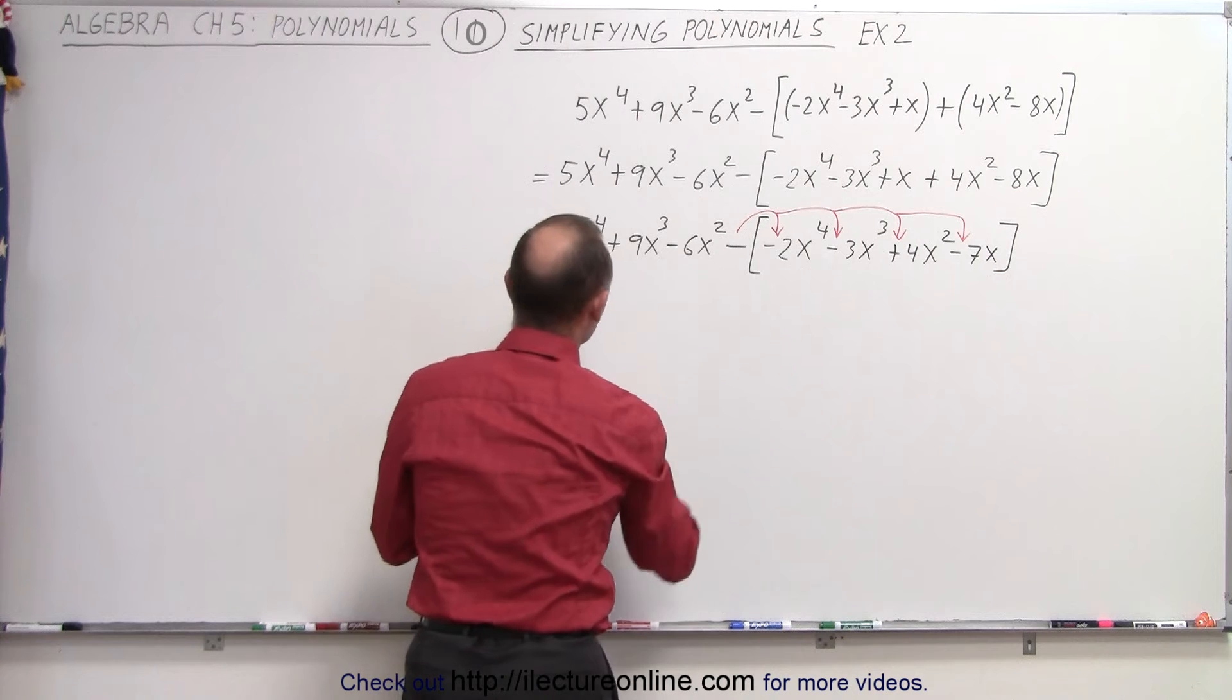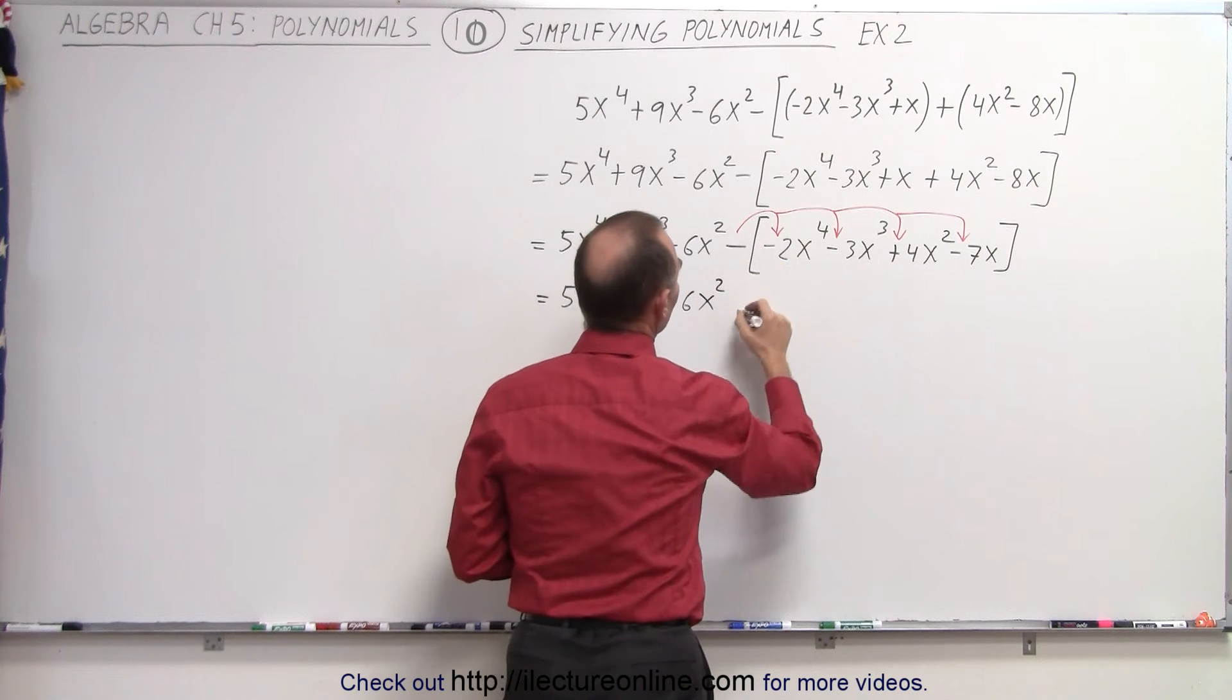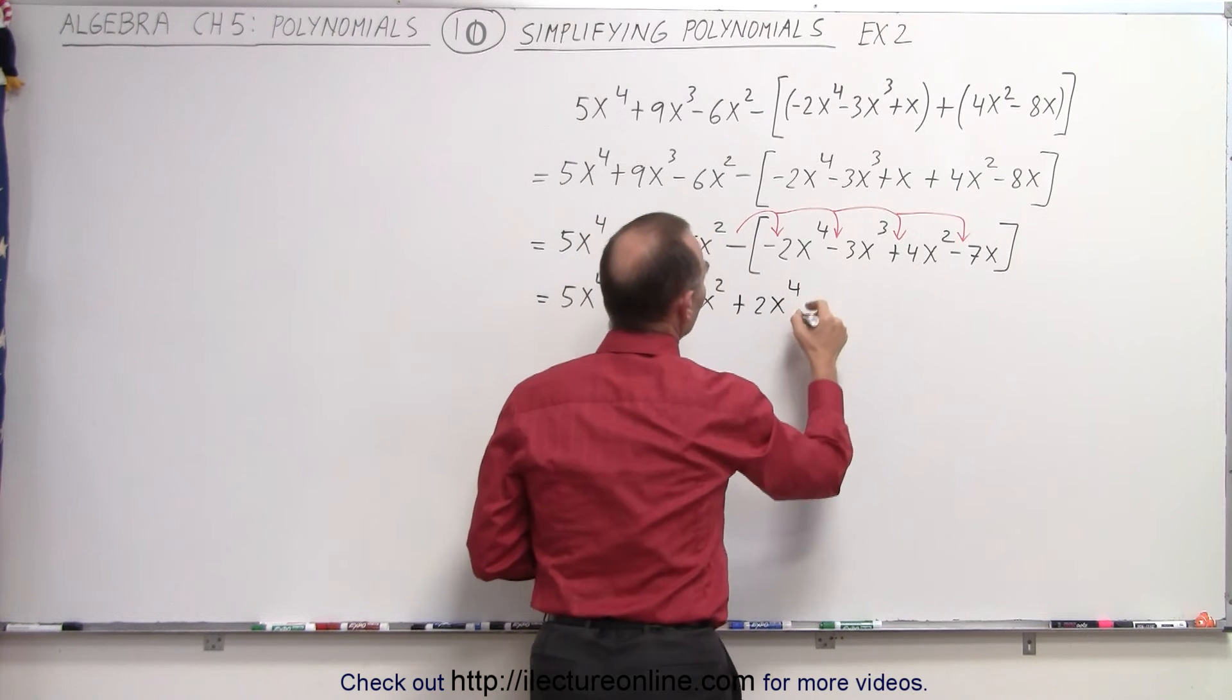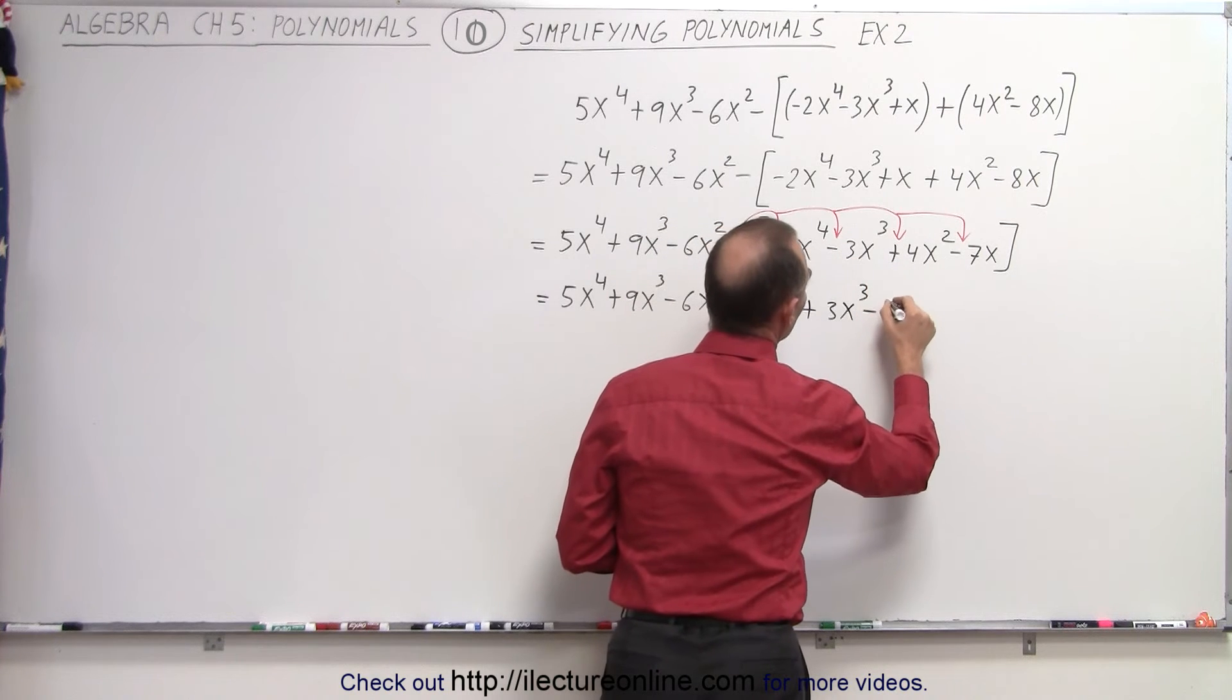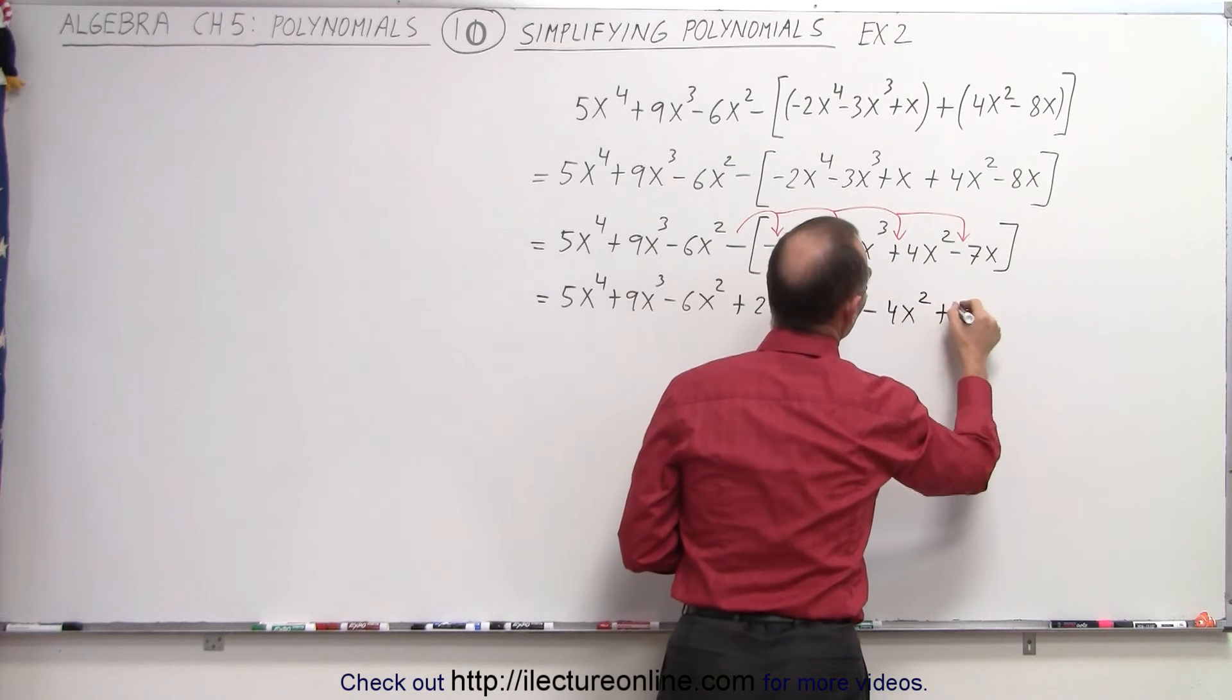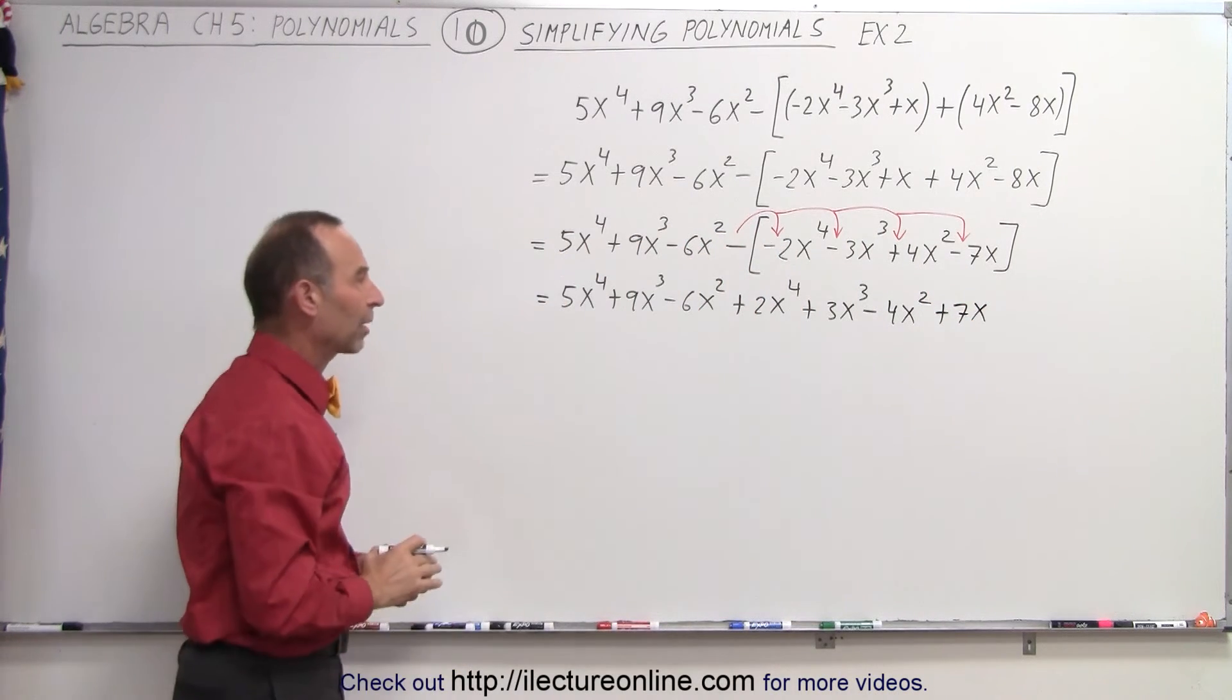So here we keep rewriting this. Now a negative times a negative becomes a plus 2x to the 4th. A negative times a negative becomes a plus 3x cubed. A negative times a positive becomes a minus 4x squared. And a negative times a negative becomes a plus 7x. So now we have all the parentheses and brackets removed.